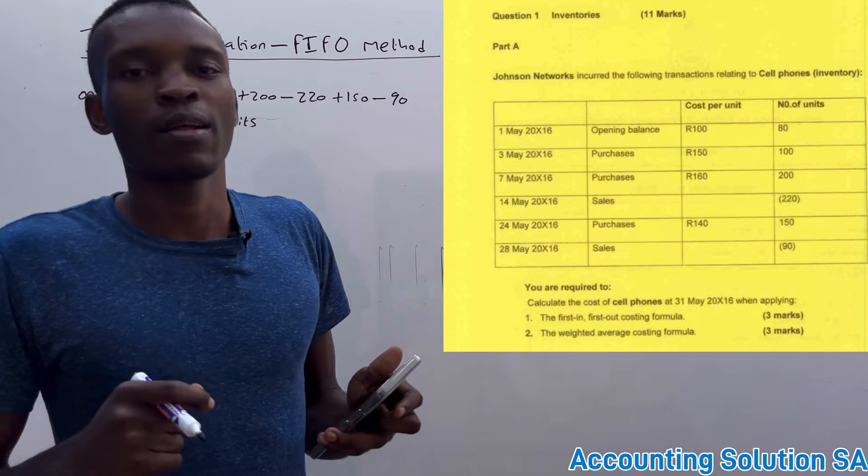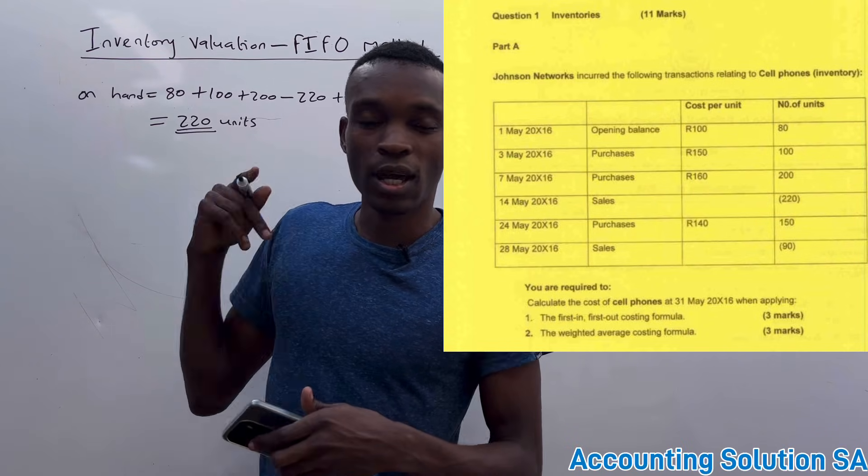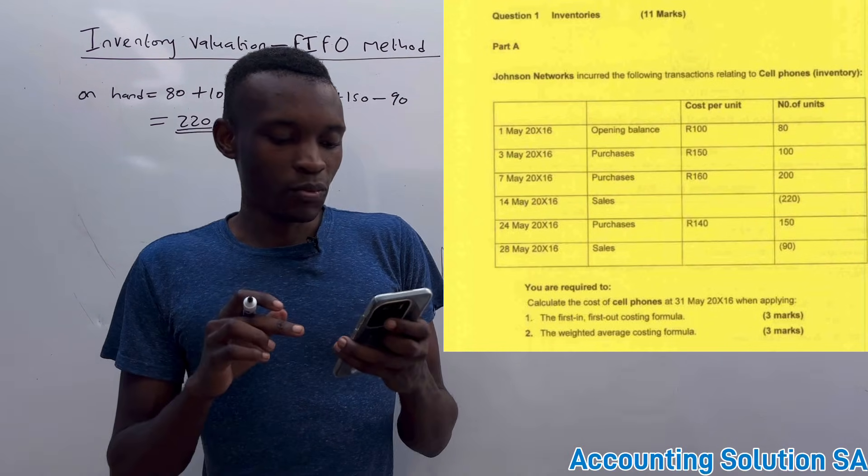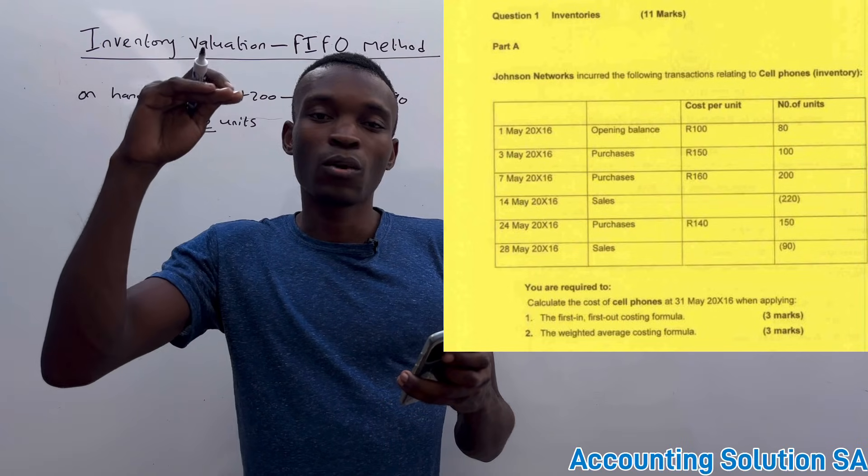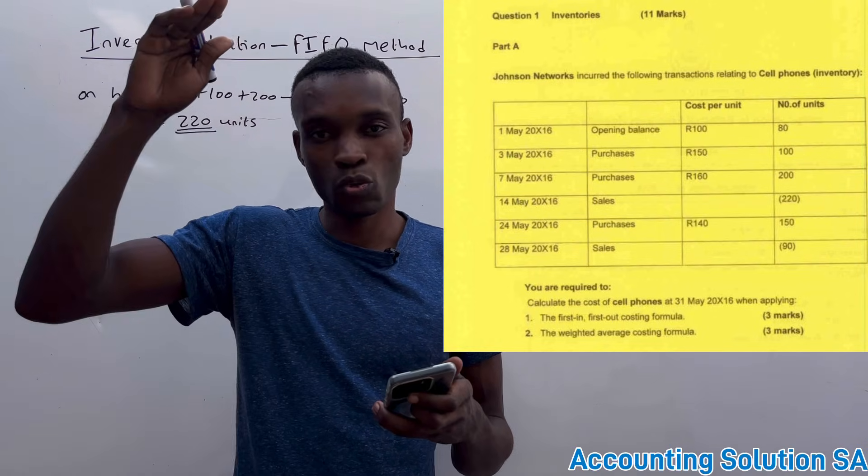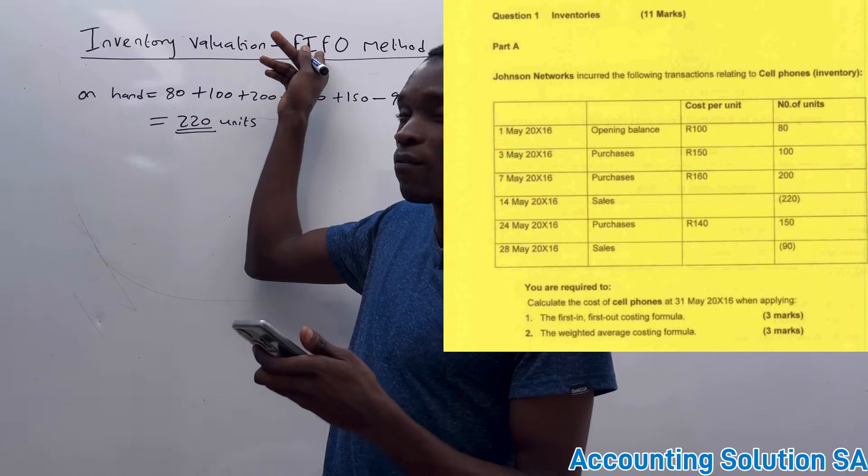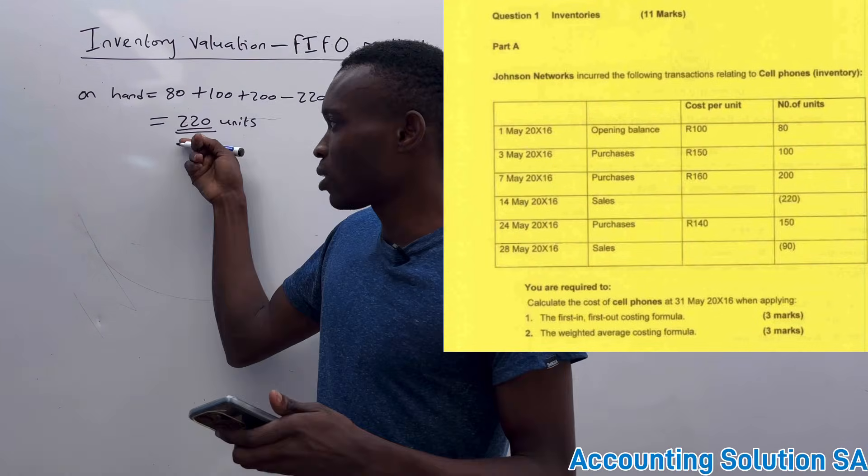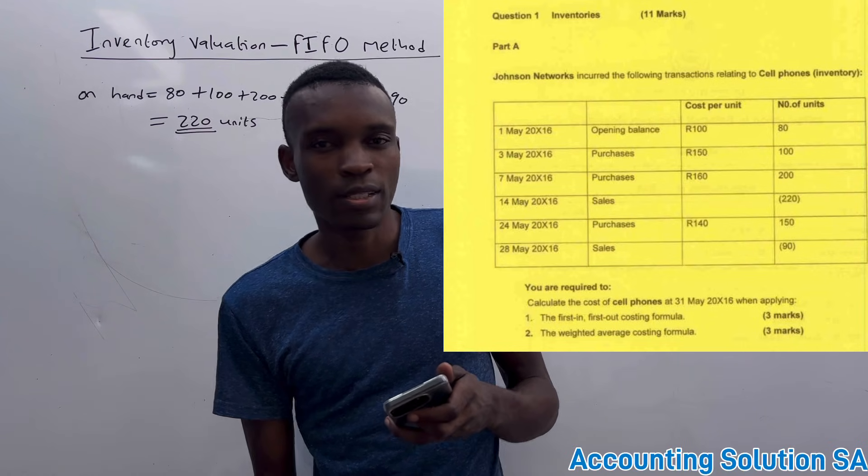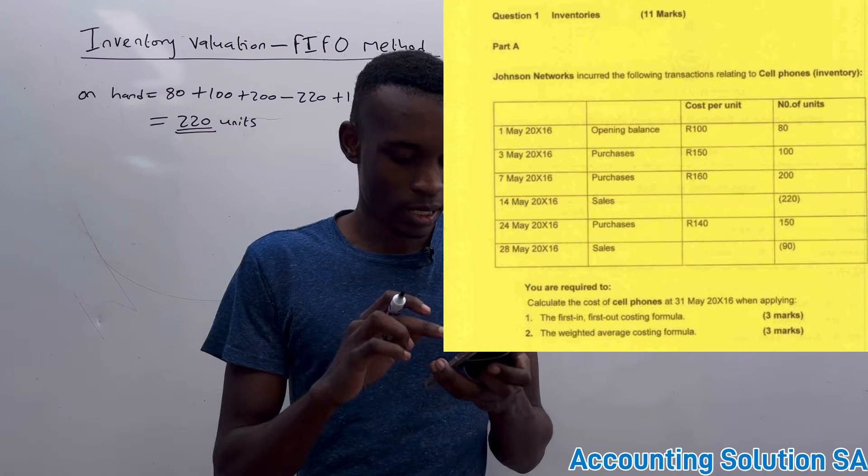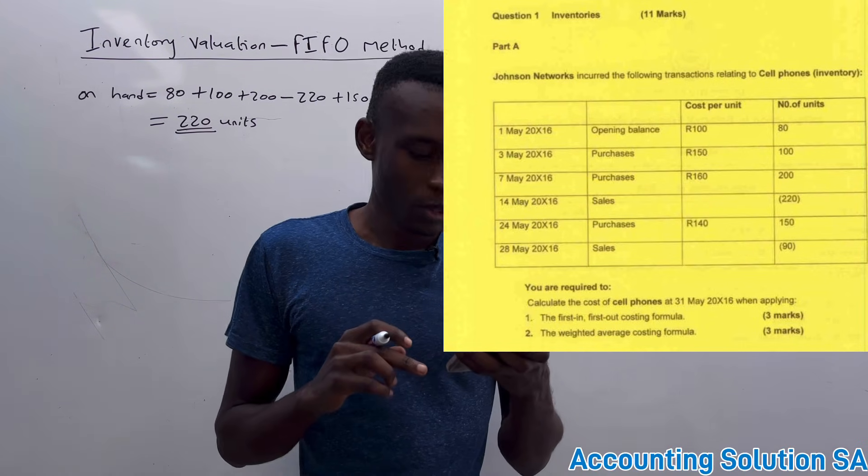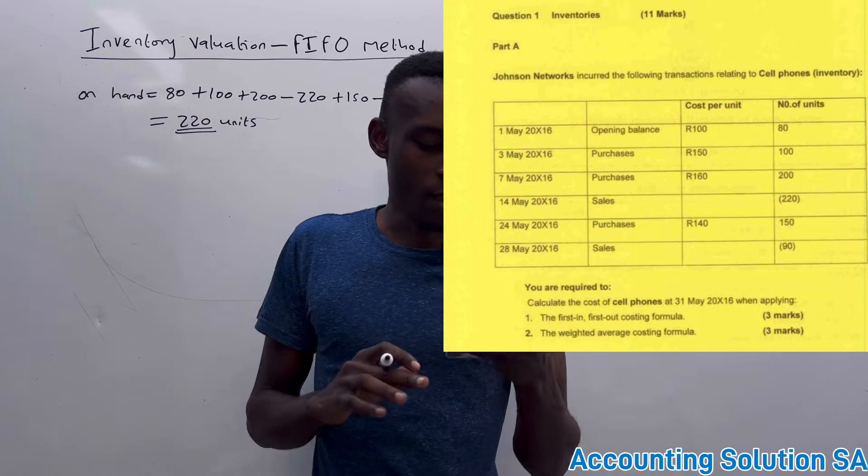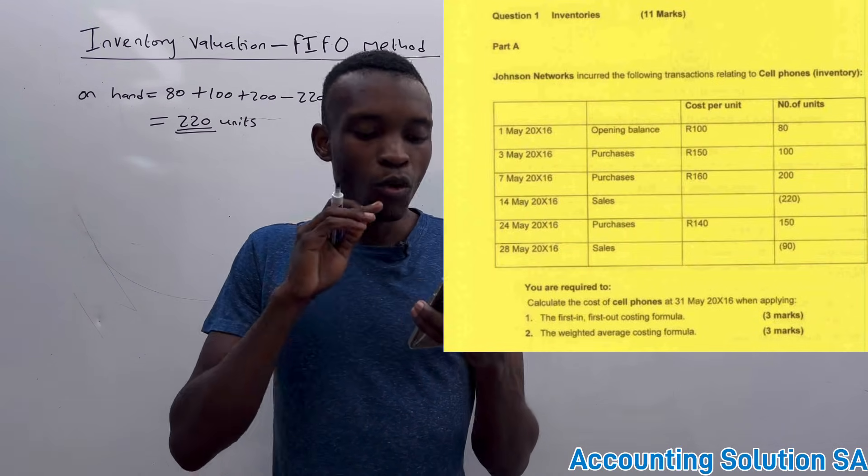The one that we have on the opening balance we assume has been sold because it's First In First Out method, which means that the remaining units are from the last batch, the last one that we purchased. Which means we're going to take from the last batch. If you check, the last batch of purchase we have 150 units.